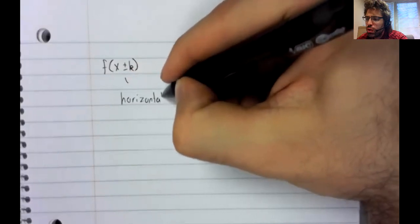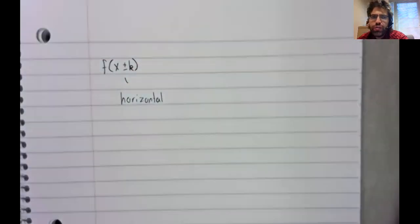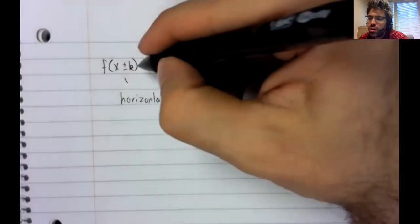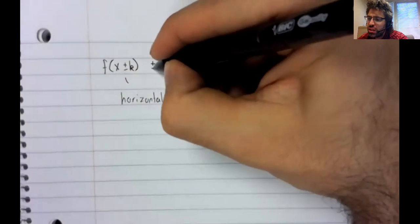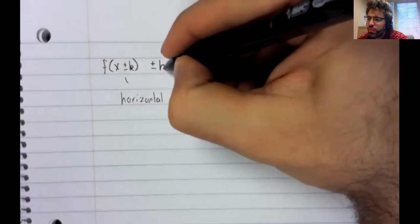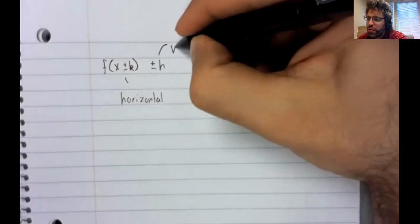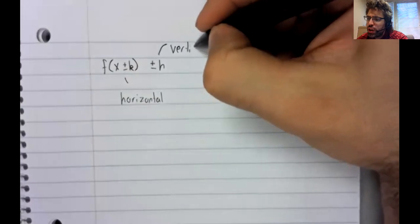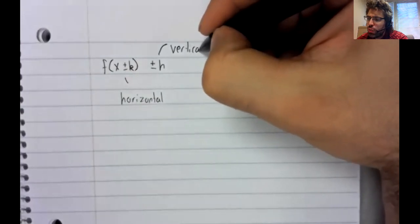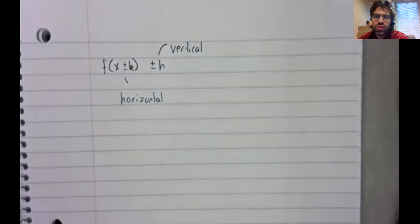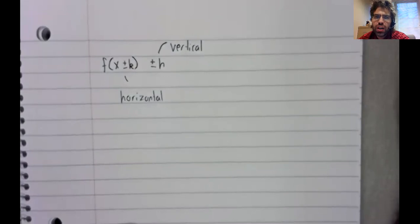Horizontal shifts appear in the parentheses. Vertical shifts appear outside the parentheses.